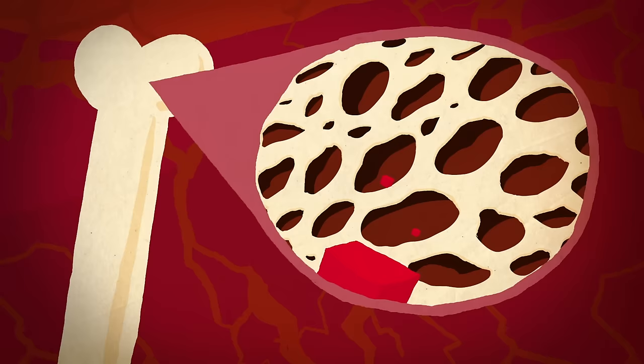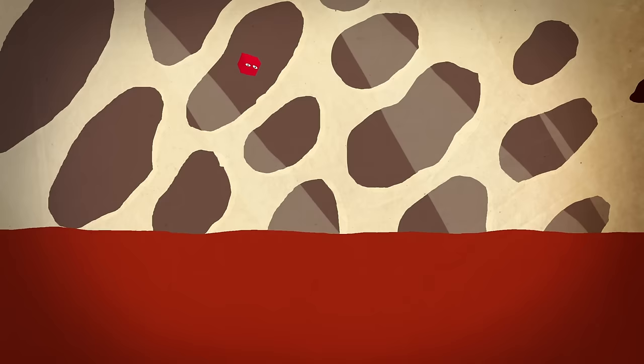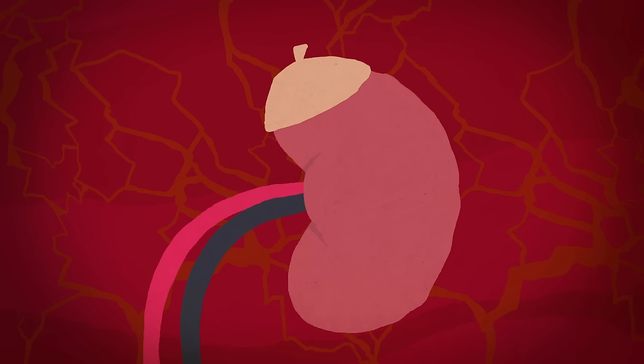Iron, the building block of hemoglobin, is carried through the cardiovascular system to the body's hematopoietic tissue. This tissue is the birthplace of red blood cells, and it can be found enclosed within our bone marrow cavities.